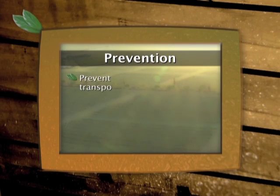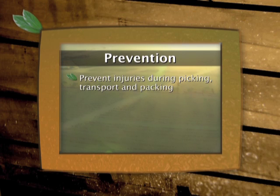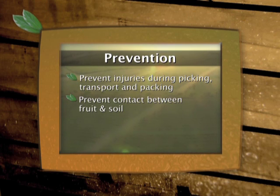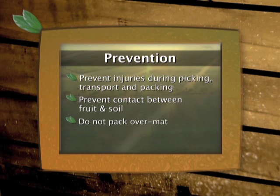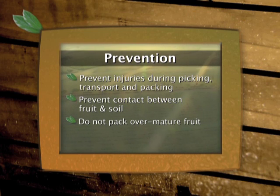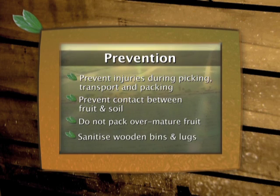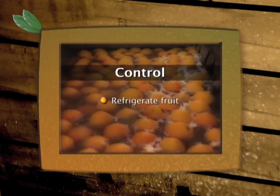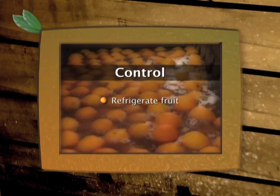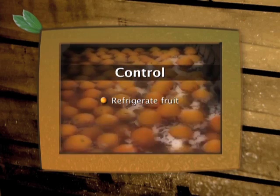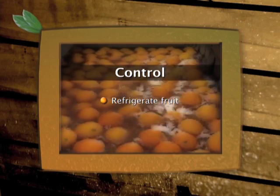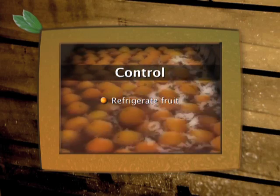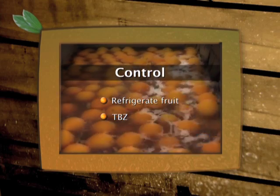To prevent the fungus, injuries to fruit must be avoided, and fruit that has been in contact with the soil must not be packed. Over mature fruit must also be avoided. Wooden bins and lugs can be cleaned with steam. Cooling fruit to below 10 degrees Celsius after packing effectively limits the development and spread of this rot. The fruit can also be treated with thiabendazole.